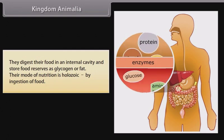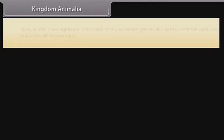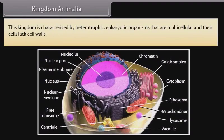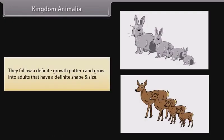Their mode of nutrition is holozoic, by ingestion of food. Many animal phyla appeared in the fossil record as marine species during the Cambrian explosion, about 542 million years ago. This kingdom is characterized by heterotrophic eukaryotic organisms that are multicellular and whose cells lack cell walls. They follow a definite growth pattern and grow into adults that have a definite shape and size.